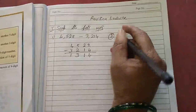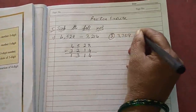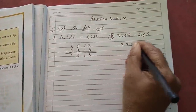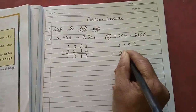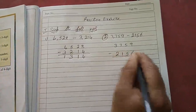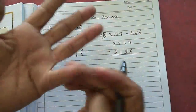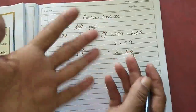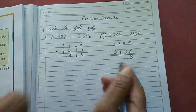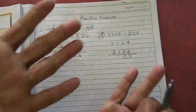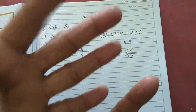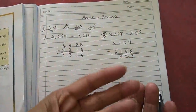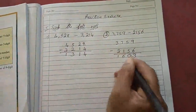Second sum: 3,759 minus 2,156. From 9, close 6: remaining is 3. From 5, minus 5: that is 0. From 7 minus 1: remaining is 6. From 3 minus 2: remaining is 1. So the answer is 1,603.